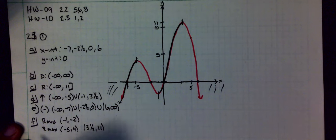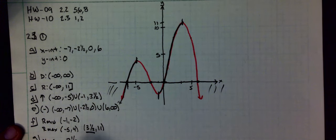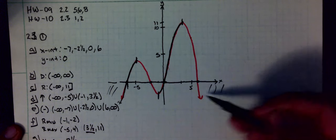Part G: does it have an absolute maximum? Yes. If so, what is its x value or values? x equals 2. Part H: does it have an absolute minimum? No.